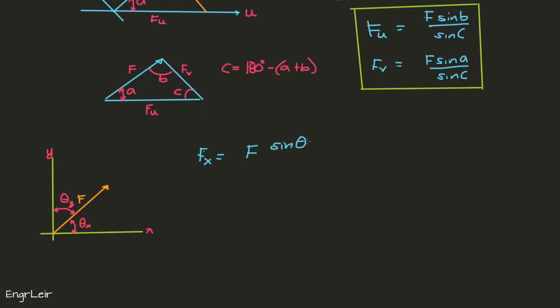F times sine of theta y over sine of 180 degrees minus the sum of theta x plus theta y. And similarly, F_y is just plug in the angles.